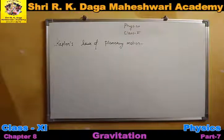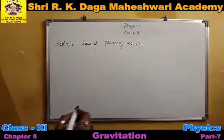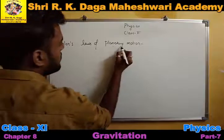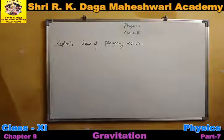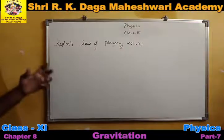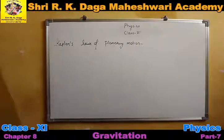The laws that govern how planets revolve around the Sun were given by scientist Kepler, which we call Kepler's Laws of Planetary Motion. Let us discuss these laws one by one.